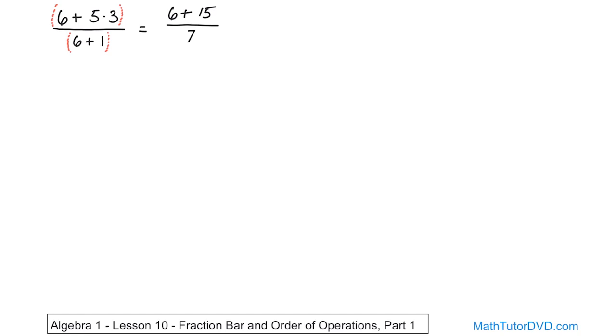Now again, you still kind of have your invisible set of parentheses around what's going on up here. So just for this problem, I will continue to kind of draw that for you as a mental aid, but I'm not going to do that every time. The six plus 15, that's the only operation left. So six plus 15 is going to give you 21. And then you have seven on the bottom. And so finally, fractions are the same thing as division. So 21 divided by seven is just the number three. And that's how you would handle this.